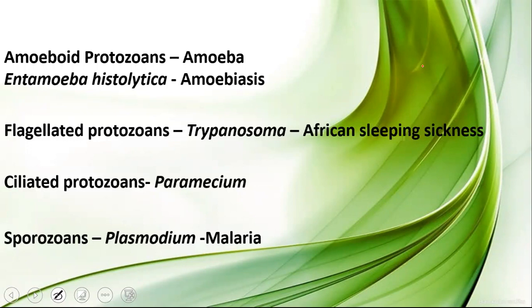Flagellated protozoans have flagella; for example, Trypanosoma causes African sleeping sickness. Ciliated protozoans have cilia as their locomotory organ; an example is Paramecium. Sporozoans bear spores; they cause the disease malaria, and the causative agent is Plasmodium.